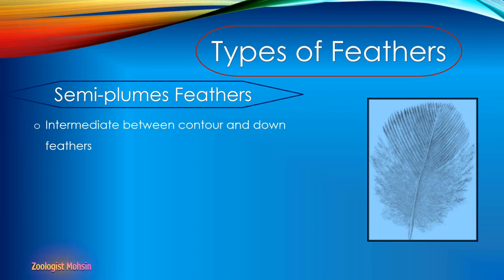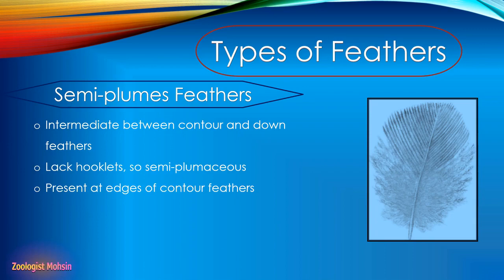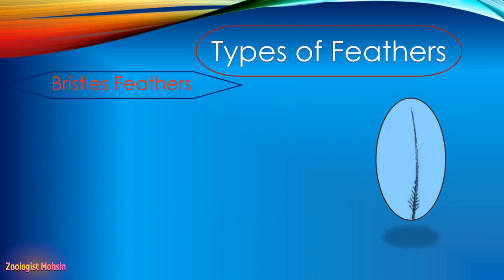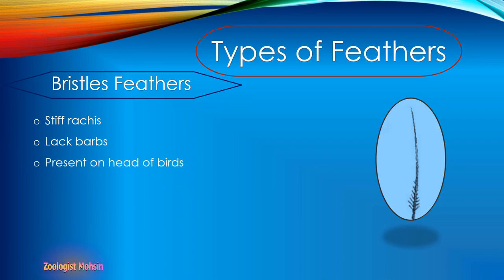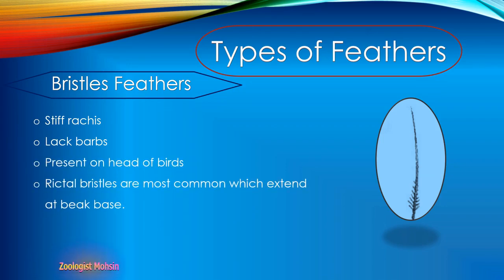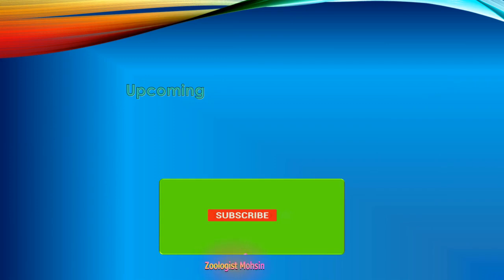Next type is semi-plume feathers. Semi-plume feathers are intermediate between contour and down feathers, and they lack hooklets. They are present at the edges of contour feathers and help down feathers in insulation. Next type is bristle feathers. Bristle feathers are stiff, rachis-like structures present mostly on the head of birds. Rictal bristles are the most common type, extending at the base of the beak, and are observed mostly in insectivorous birds.